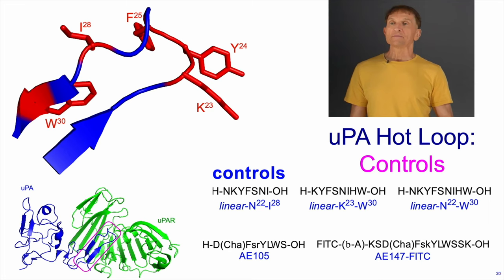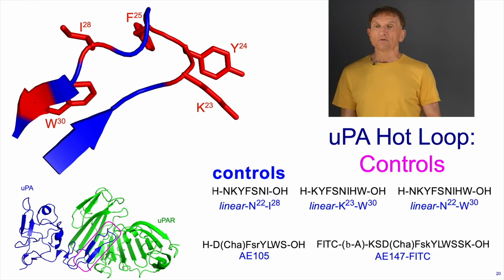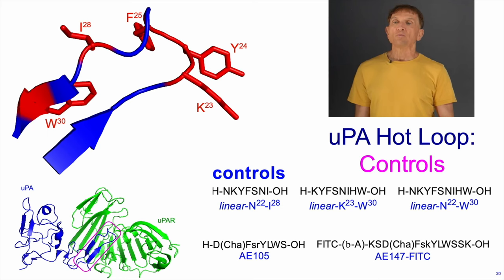We can compare with the linear peptide corresponding to that loop, but usually that doesn't get us anywhere because they don't bind very well at all. In this particular case we can compare with compounds like AE105 and AE147, which we can also fit with a label to make fluorescence polarization (FP) assays easier. It turns out that AE105 is one of the best ligands for UPAR.